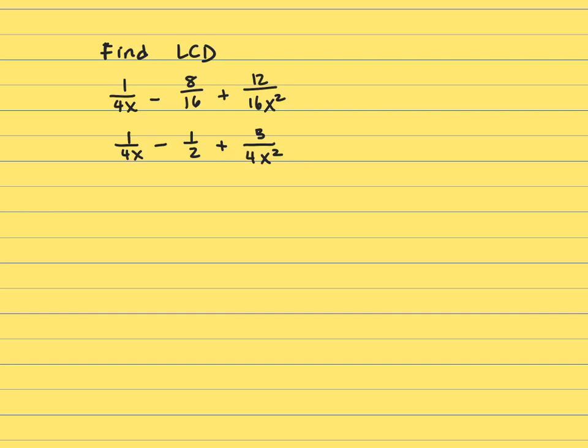The process to find the LCD is you list all of your denominators and then you break them down to prime factors.